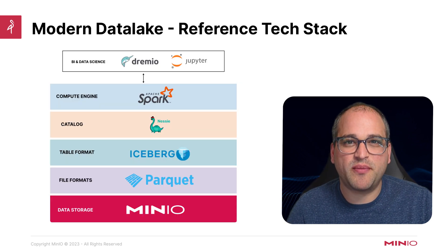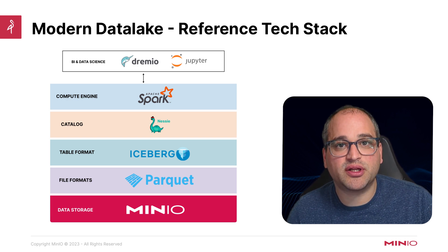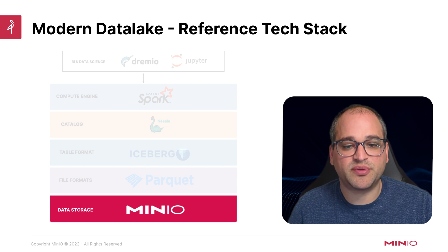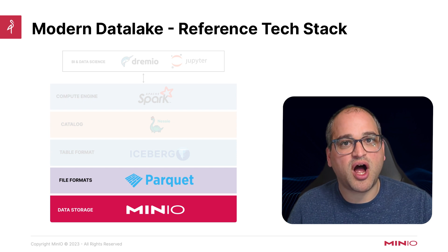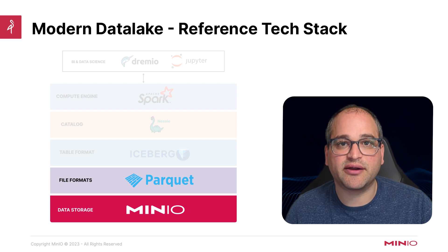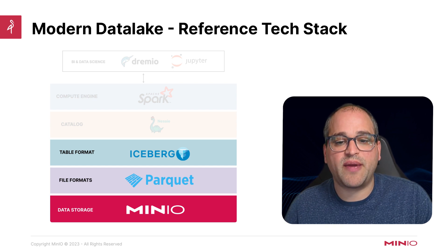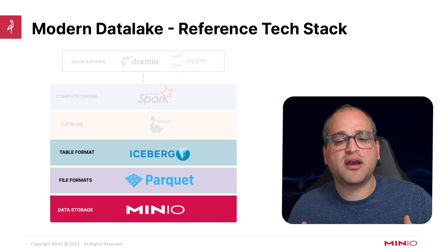So what exactly is a modern data lake and what makes it modern? Here we have a reference tech stack that breaks down the five components that make a data lake much more modern, and how they unlock the key capabilities we looked at earlier. Starting at the bottom, we have MinIO, which serves as our object storage layer. MinIO is an S3-compatible object store that's massively scalable and fully open source. Above that is the file format layer: Apache Parquet is a binary serializable, columnar file format that gives it the ability to do high-speed analytics and aggregations at scale. Sitting above that is Apache Iceberg, our open table format that wraps around the raw data Parquet files in our data lake.